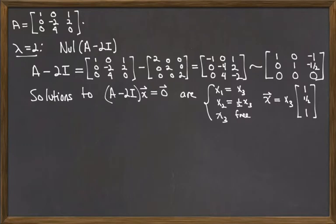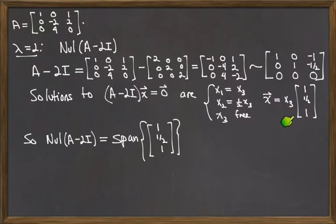So to conclude, for this eigenvalue, the eigenspace is spanned by this single vector 1, 1 half, and 1.